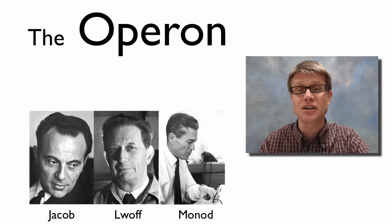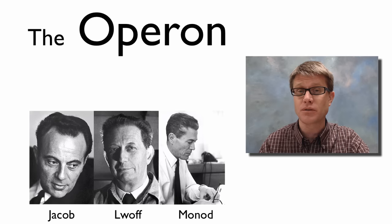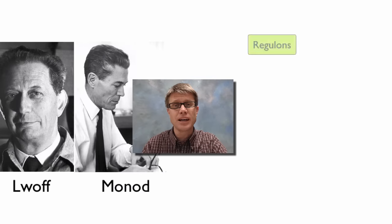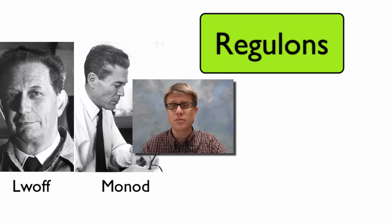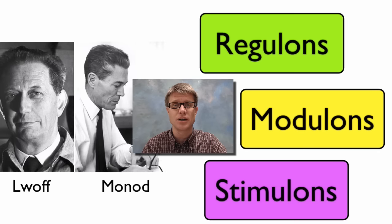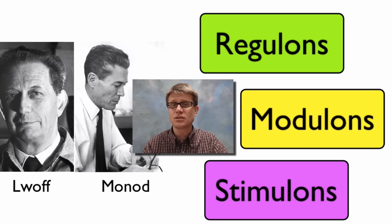They got to coin the term operon, and basically it means 'to operate.' It's mostly found in prokaryotic cells — mostly found in bacteria. There are a few eukaryotic operons, but in general it's just going to be found in bacteria. This led to other terms like regulons, modulons, and stimulons. Stimulons are groups of operons operating together from one stimulus.